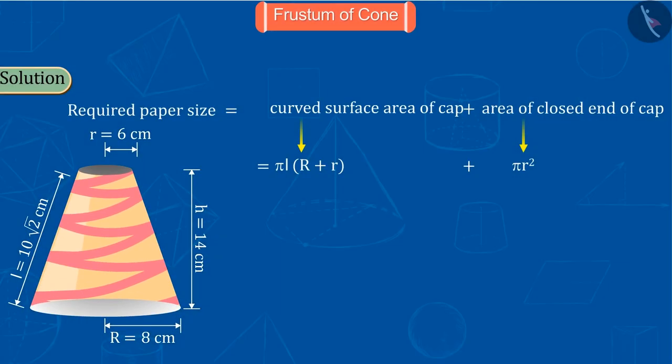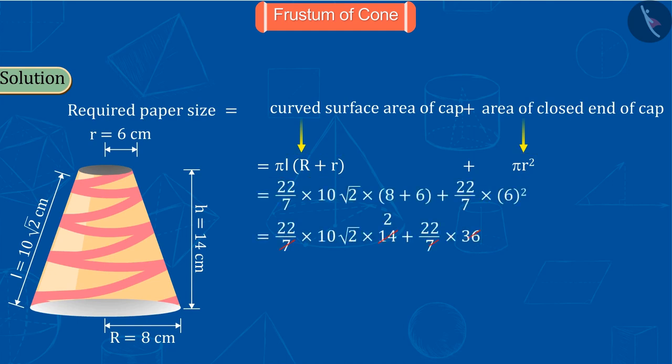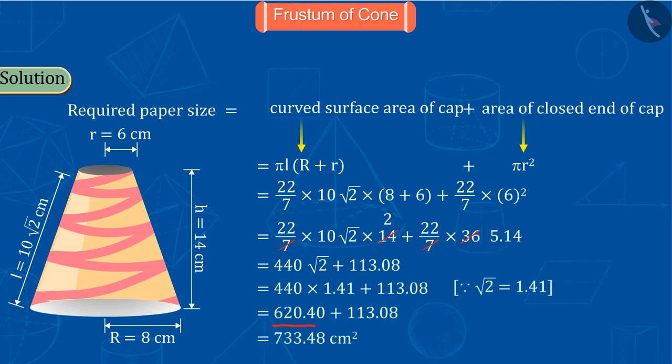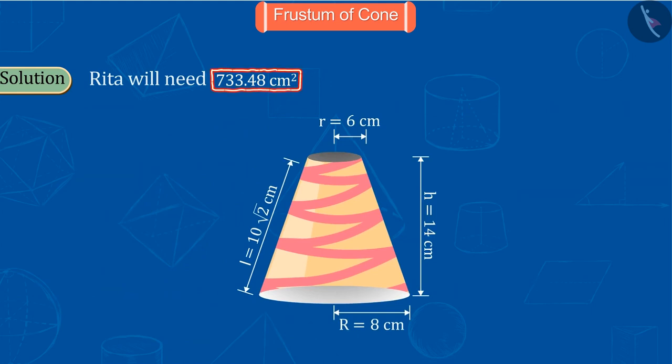Now replace all values in these formulas. On further solving we get 733.48. So Rita would need 733.48 square centimeters of paper to make a hat.